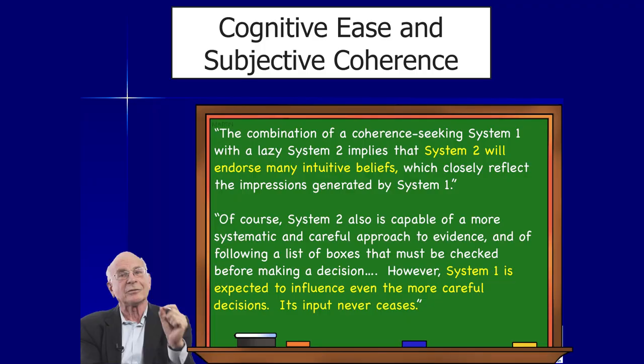Cognitive ease is the concept Kahneman likes to talk about — the fact that System 1 easily makes decisions, linkages, and conclusions. It's not until something really abnormal kicks in before System 2 decides to get involved. As he says, the combination of a coherent-seeking System 1 with a lazy System 2 implies that System 2 will endorse many intuitive beliefs which closely reflect the impressions generated by System 1. In other words, System 2 being lazy, if the beliefs of System 1 kind of make sense, System 2 will just endorse it — yeah, sure, that's fine.